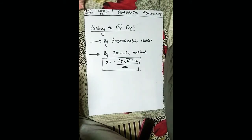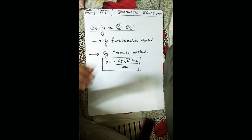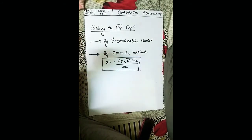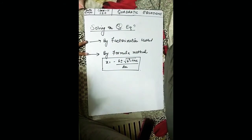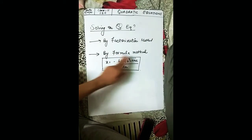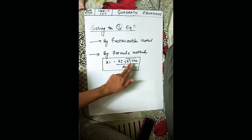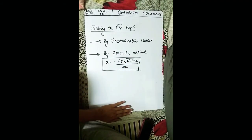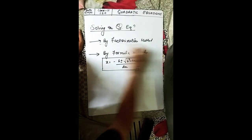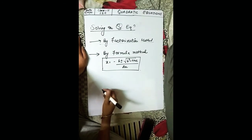Now coming to the main thing: how to solve the quadratic equation. For solving, we mainly have two methods — factorization method, and the formula method, which is x = (−b ± √(b² − 4ac)) / 2a.